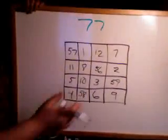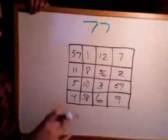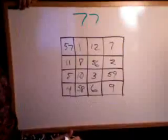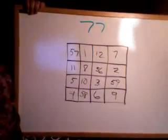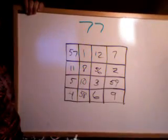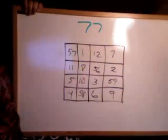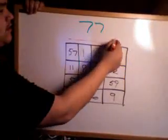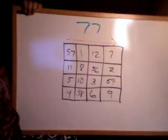Now, I've filled this up fairly quick and I want you to notice what I was doing. If you notice here, 57 plus 1 is 58 plus 12 is 70 plus 7 is 77.